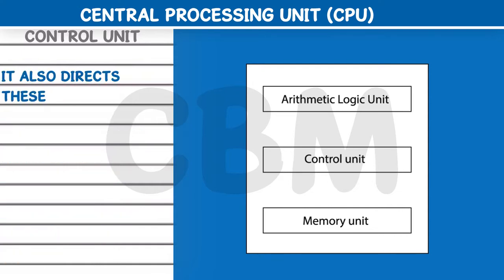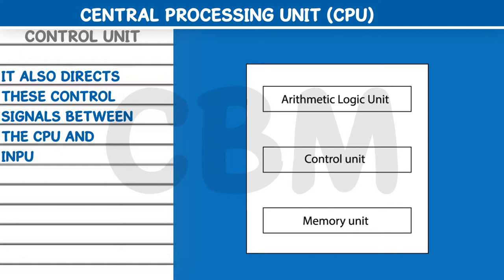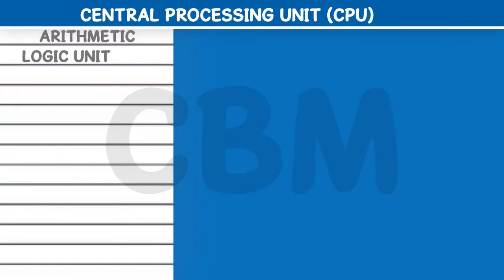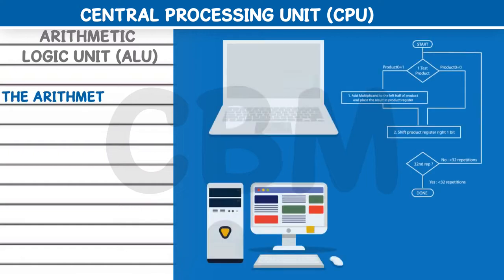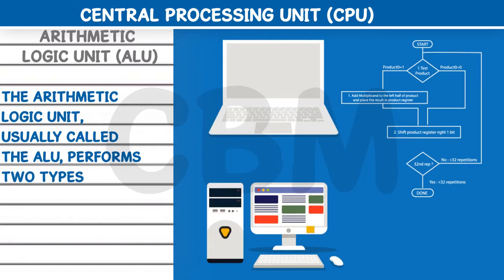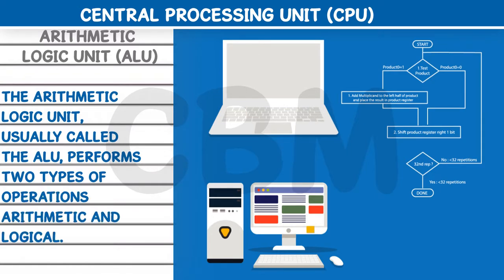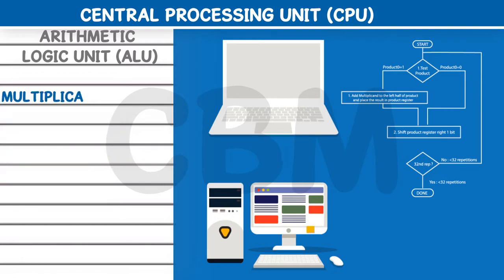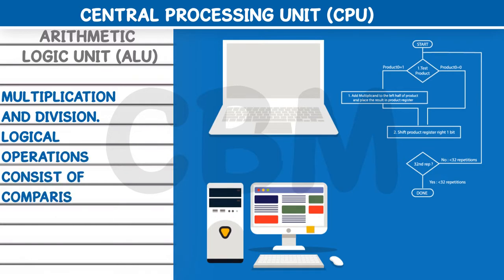The control unit also directs control signals between the CPU and input-output devices. The arithmetic logic unit, usually called the ALU, performs two types of operations: arithmetic and logical. Arithmetic operations are mathematical operations such as addition, subtraction, multiplication and division. Logical operations consist of comparisons.